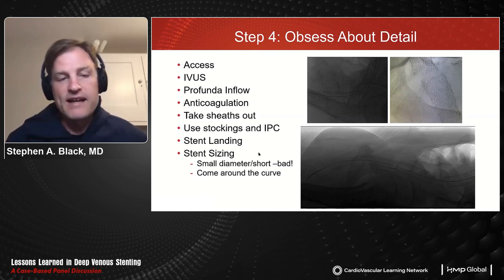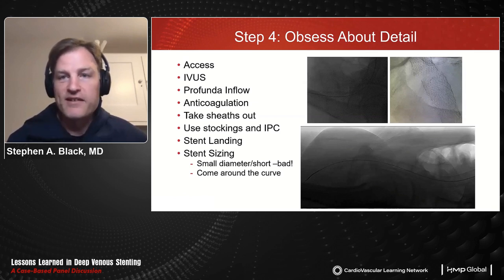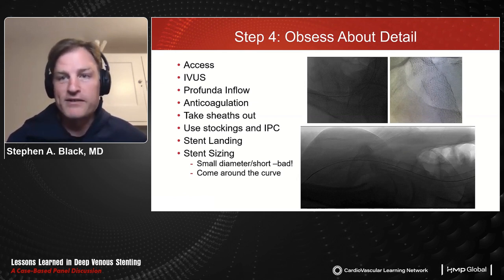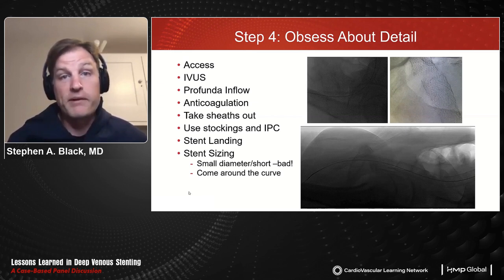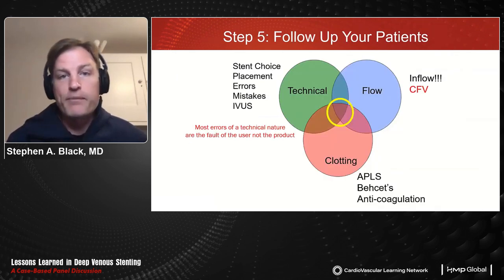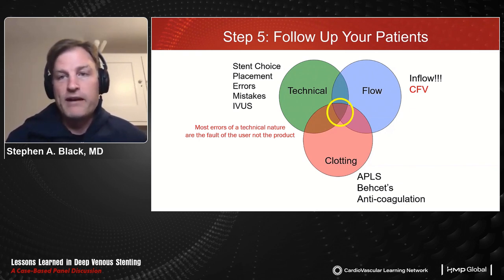Stent migration is most likely with small diameter, short stents. If treating a NIVL patient and considering a 40 or 60 millimeter, 14 mm or smaller stent, don't — put it back on the shelf and take something else. That prevents approximately 90% of stent migrations. If a bigger stent moves, you have to ask whether the stent was needed in the first place. Following up patients reveals a lot, and early practice often involved many technical errors, particularly with more complicated patients.